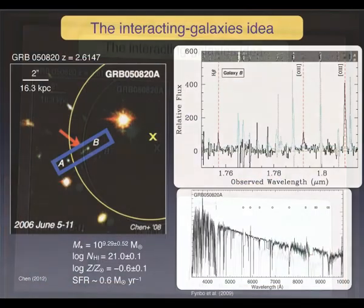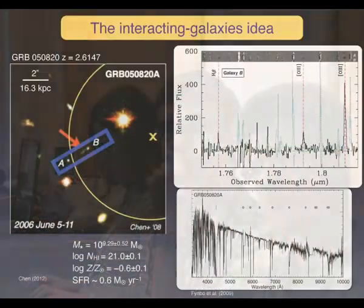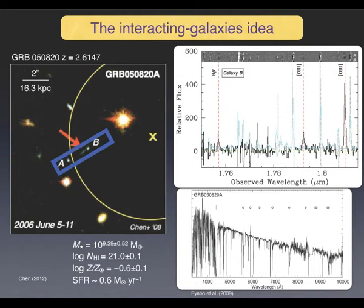There are other examples — separations of 700 km/s and 2000 km/s. The fraction of double absorbers at high redshift associated with GRB afterglows is relatively high — a factor of a few higher than what you'd expect using quasar absorption lines.